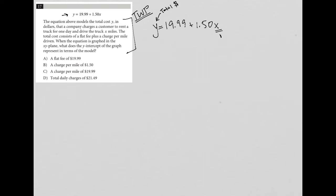So this x represents the number of miles, which means this 19.99 must be some type of flat fee. This is a fee that you're paying that has nothing to do with the number of miles that you drive.